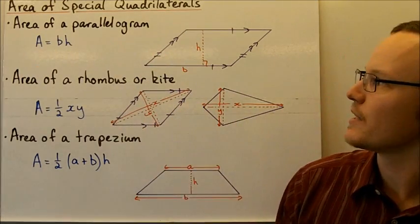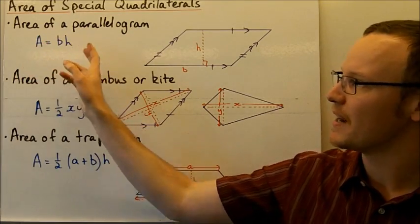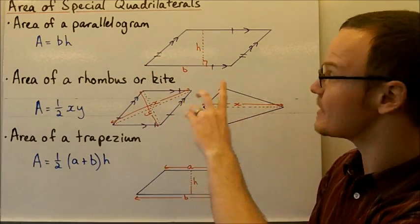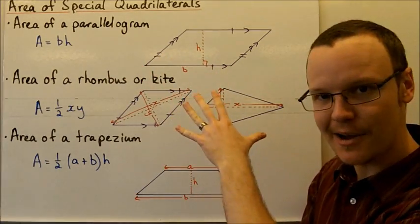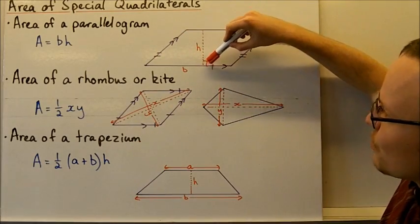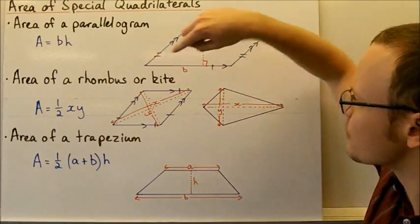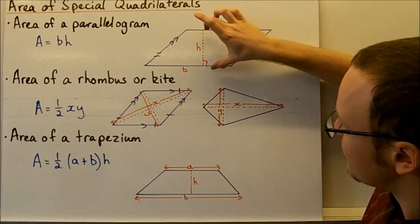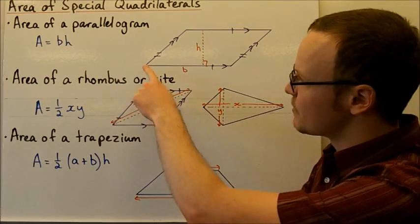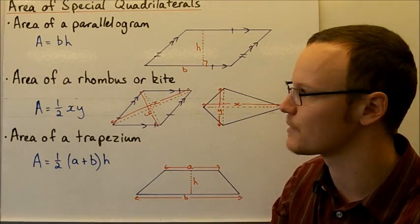We've got the area of a parallelogram here. The area of a parallelogram is equal to base times height, so A equals B times H. The height we're looking at is the perpendicular height of the parallelogram — drawing a line up from the base, very much like looking at a triangle, and looking at the perpendicular height there. We multiply that by the base and that gives us the area of the parallelogram.